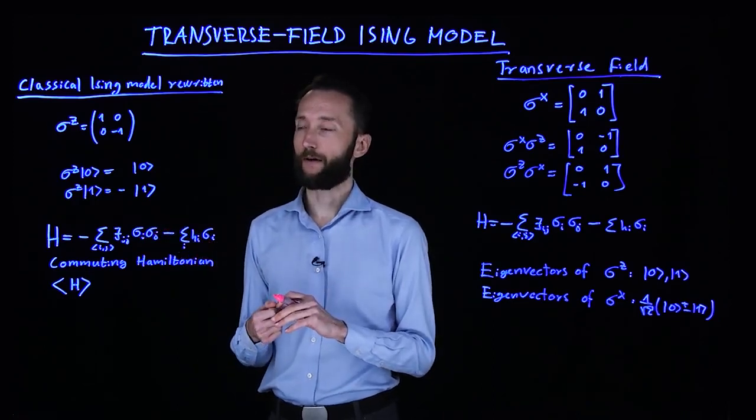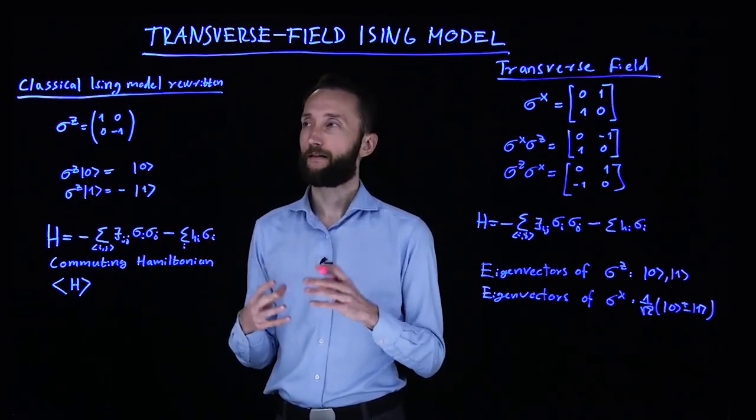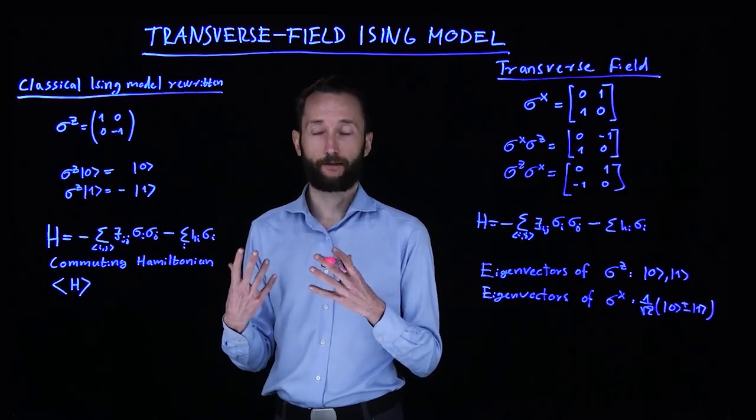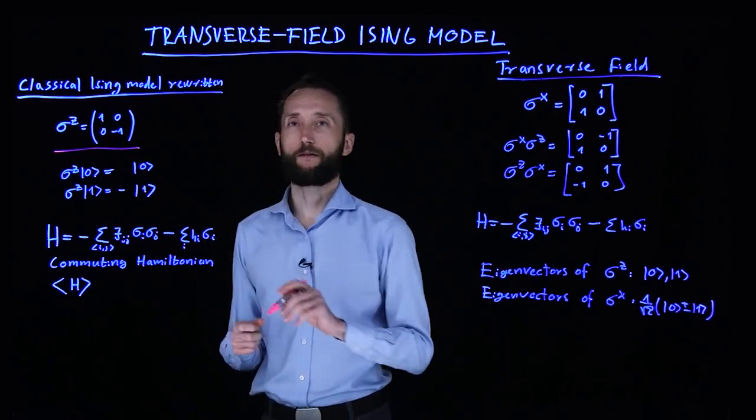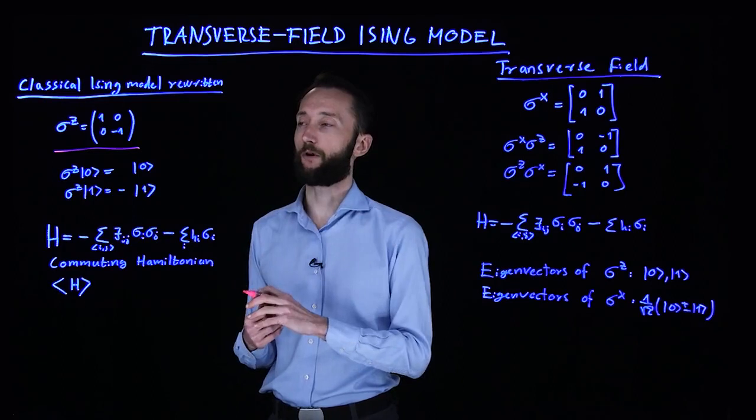We know that in quantum mechanics we have states and operators acting on these states. Let's look at a particular operator that could act on a qubit. I defined this sigma z operator, which is called a Pauli matrix, the z Pauli matrix. It has this very simple form.